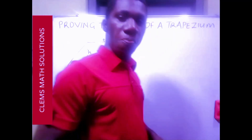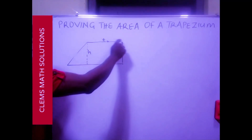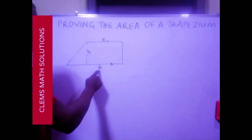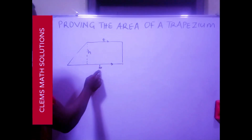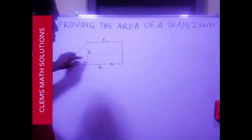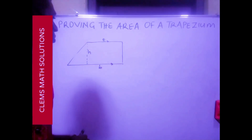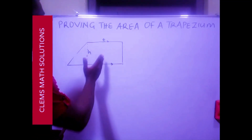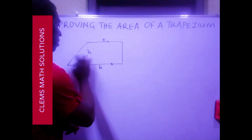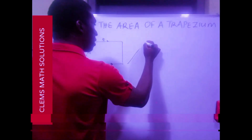You can see that this is a trapezium with top T and base B — this is the top and this is the base, and this is the height. Now I want to split this trapezium into two shapes: a triangle and a rectangle. If I split this shape I'm going to have something like this.